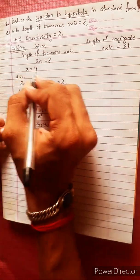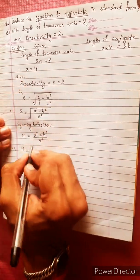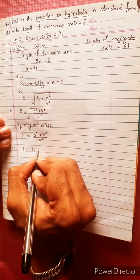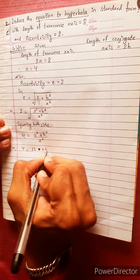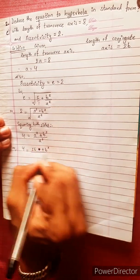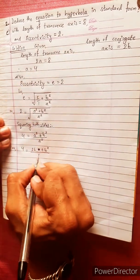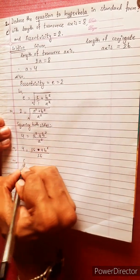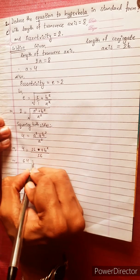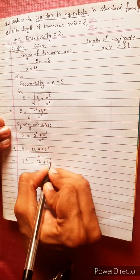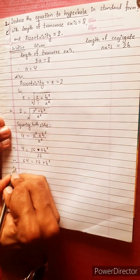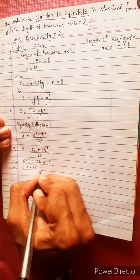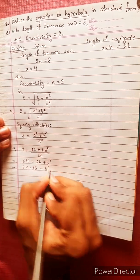4 equals to a squared. 4 squared is 16. Equals to 16 plus b squared divided by a squared. 4 squared is 16. Or 16 times 4 equals 64. Equals to 16 plus b squared.